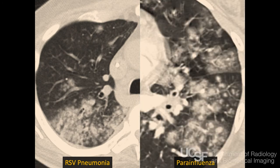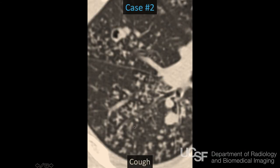Here's another case. This is another virus — parainfluenza in this case. I don't know the difference between the viruses that cause this, but you can see similar findings. You see larger areas of consolidation, but when you look at areas that are less affected, we see these little centrilobular nodules sparing the pleural surface. This is one of the most common things we encounter — small airways disease from an infectious bronchiolitis.